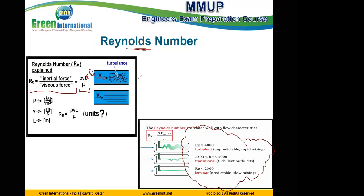If the shape of the pipe is not circular, we calculate something called the hydraulic diameter. It's called hydraulic diameter, and we have an equation to calculate it. The equation is the ratio between the cross-sectional area and the perimeter of the shape — for example, for a square or rectangular tube.